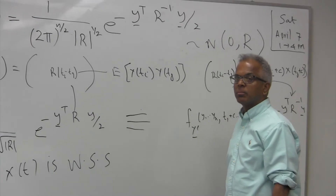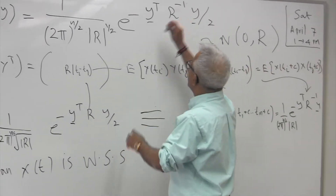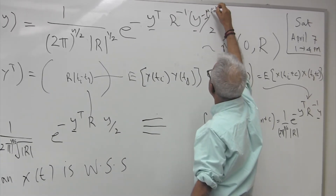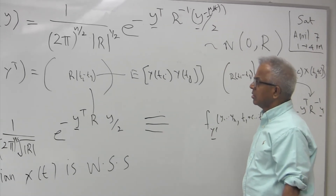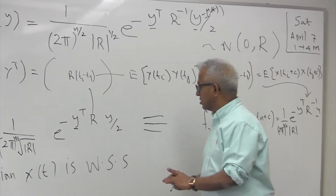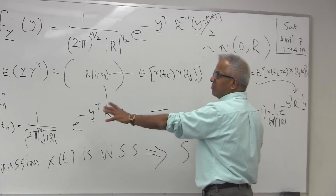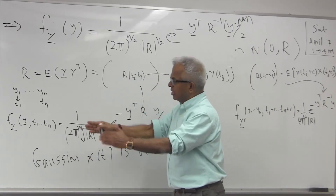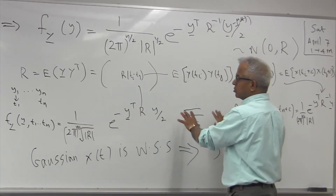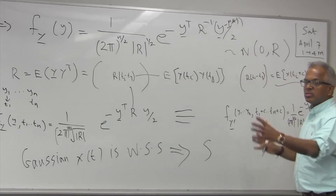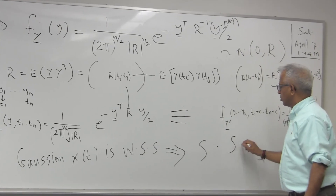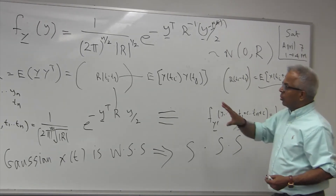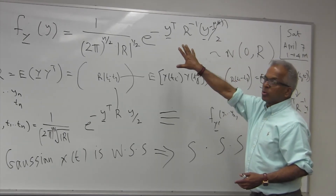Since R̃ = R, the density function of the shifted process equals the density function of the unshifted process. This holds for any n and any shift c. Consequently, a wide-sense stationary Gaussian process is also a strict-sense stationary process. We just proved this exceptional case.